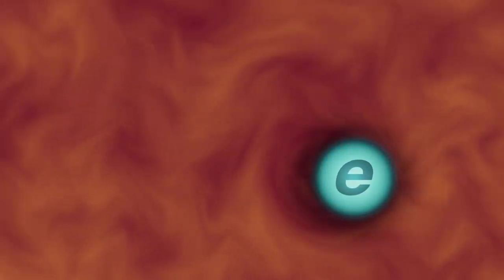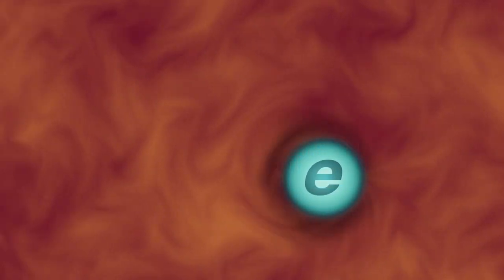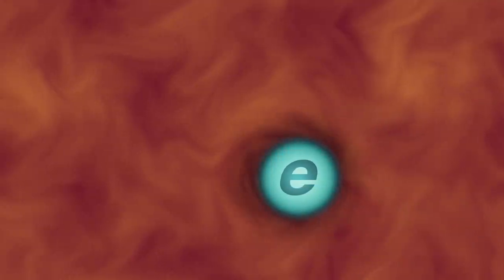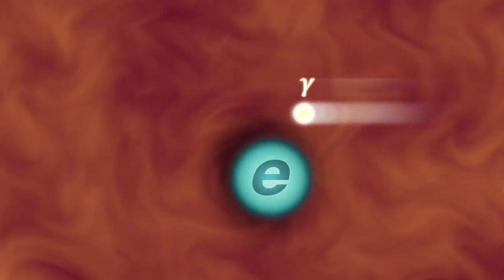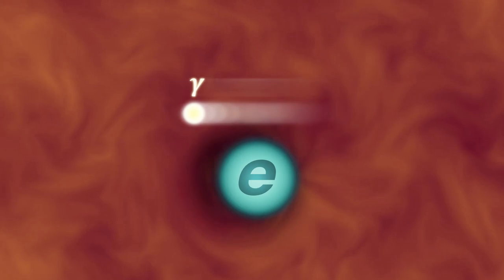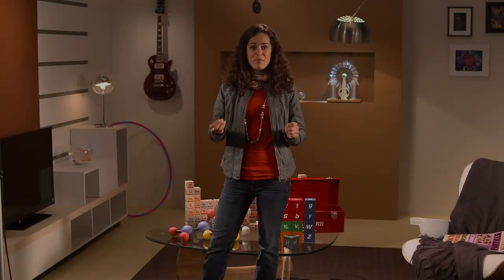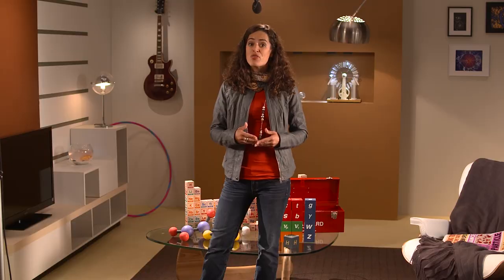La résistance que le champ de Higgs doit exercer dépend de la particule en question. Si vous êtes une particule comme un électron, vous interagissez avec le champ de Higgs et éprouvez une résistance chaque fois que vous tentez d'accélérer. Par contre, si vous êtes un photon, vous traversez le champ de Higgs sans interagir avec lui. Vous êtes sans masse et vous vous déplacez à la vitesse de la lumière. En retirant le Higgs du modèle standard, la prédiction serait que toutes les particules sont dépourvues de masse, comme les photons. Et ce n'est pas le cas. Puis c'est une bonne chose, parce que notre monde serait très différent sans le champ de Higgs.